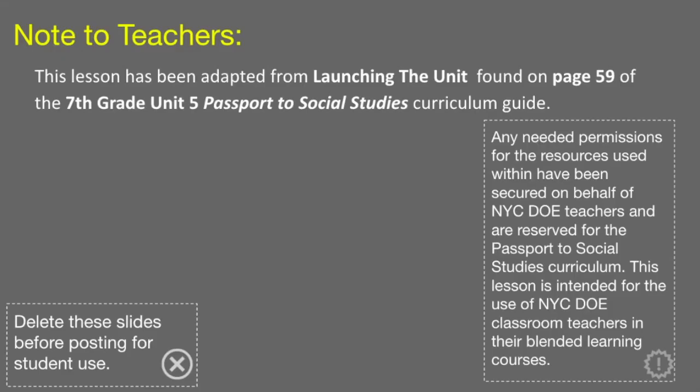First, we will discuss the importance and rationale for launching the unit, which can be found on page 59 of the 7th Grade Unit 5 Passport to Social Studies Curriculum Guide. Engaging students with the content to be studied is important. Making the content relevant to their personal lives, or making a connection to how the learning can be used in a real-world setting, is one way to get the students hooked. Another effective hook is making students see the content as interesting and unusual by having them view the content from a different perspective. Students are more interested and pay more attention to activities that are introduced in a way that engages them emotionally, intellectually, and socially.